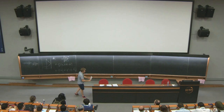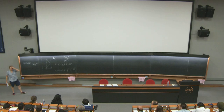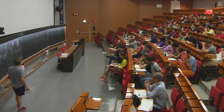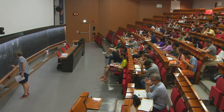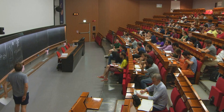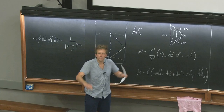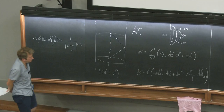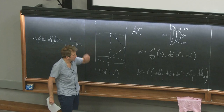Let me recap where we got to last time. We introduced AdS space-time, which has a neat embedding as a hyperboloid into a two-time generalization of Minkowski space. We saw that the isometries, best seen from this embedding picture, are SO(2,D). This is highly analogous to embedding a round sphere into Euclidean space and getting an SO isometry group, just with sign flips in the metric since this is a Lorentzian metric.